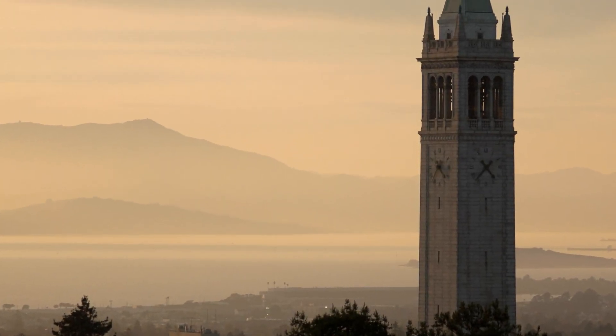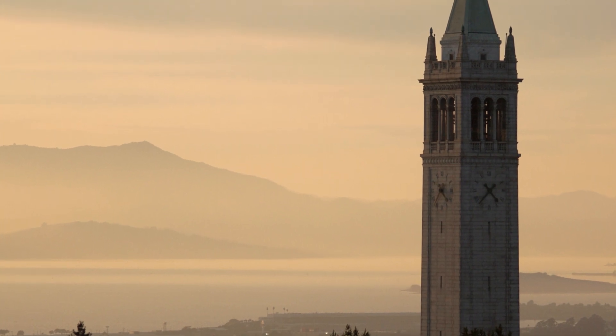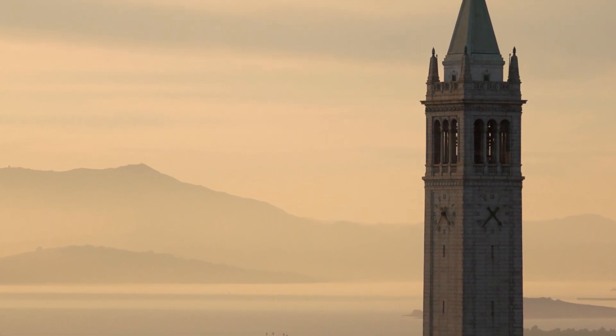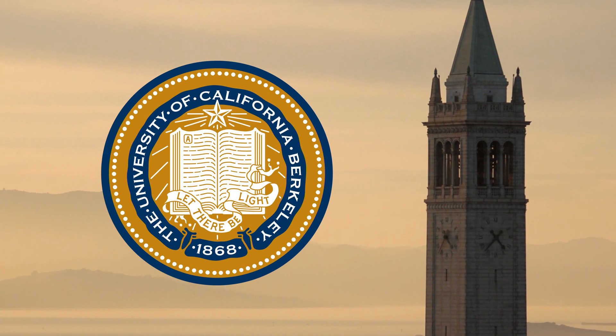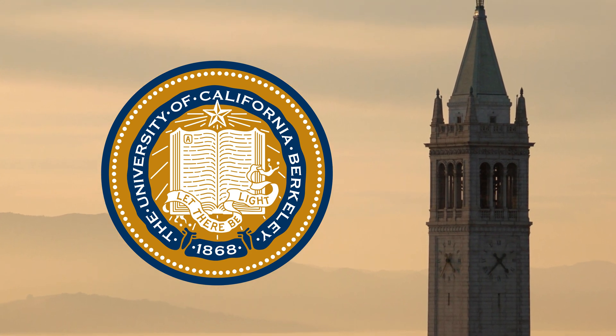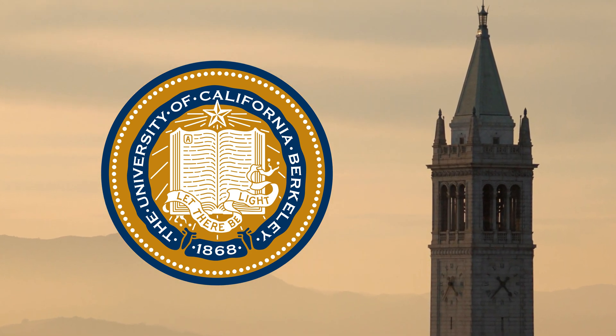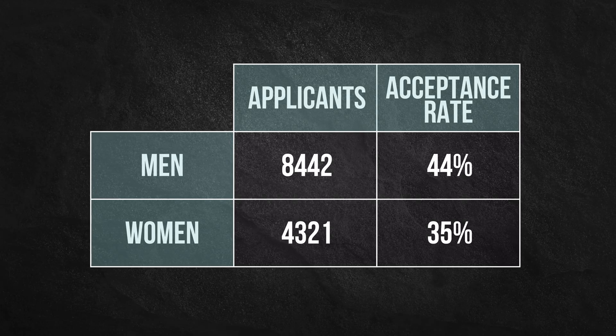Perhaps the best-known real-world example of Simpson's paradox occurred in 1973, when school officials at the University of California, Berkeley feared they might get sued for gender discrimination over graduate school admissions. The concern was that the acceptance rate of men was higher than that of women, and the difference was so large it was unlikely to be due to chance. But when they scrutinized the data on a per-department basis, they came to the opposite conclusion.